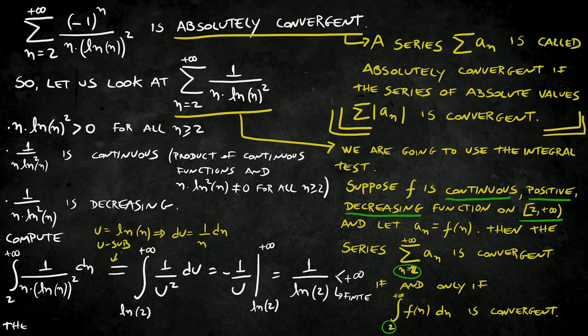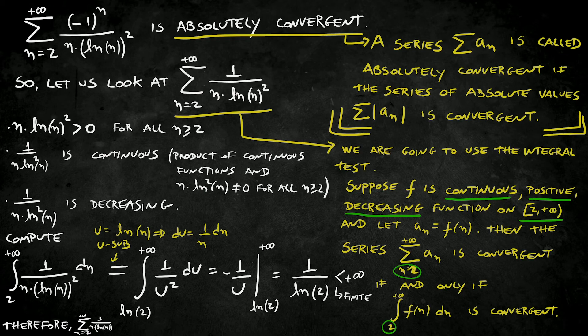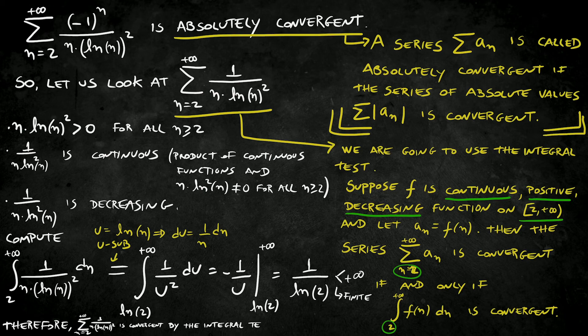Therefore, my series is convergent. It means my series of absolute values is convergent. So, the series that I'm talking about is also convergent. Therefore, my series is absolutely convergent.